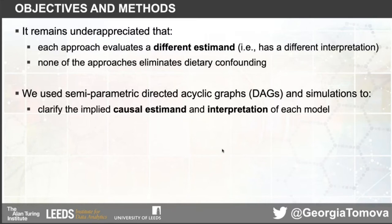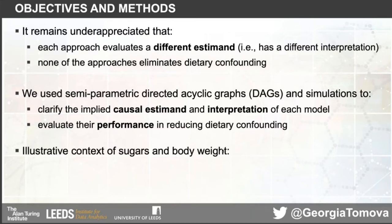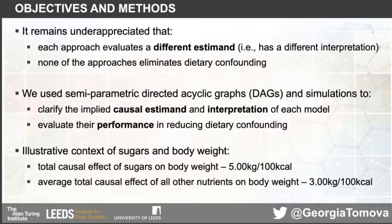We explore these methods further using semi-parametric directed acyclic graphs and simulations to clarify the implied causal estimand and interpretation of each model, and evaluate each model's performance in reducing dietary confounding. Data simulations are used because this is the only way to know the true value and compare it to our estimate. We use the illustrative context of non-milk extrinsic sugars — referred to as sugars from here on — and body weight, noting these are illustrative and do not correspond to real effects. We simulated a true total causal effect of sugars on body weight of five kilograms per 100 calories, and an average total causal effect of all other nutrients on body weight of three kilograms.